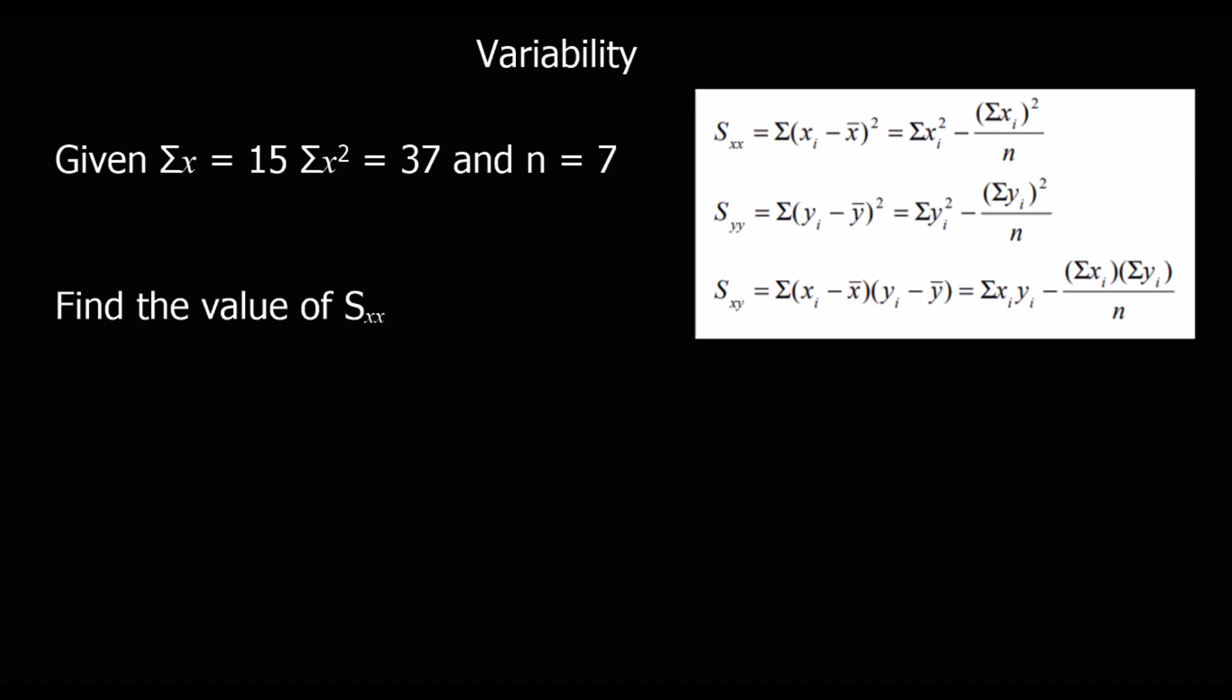These are very similar to variance. The variance of X is very similar to SXX. The only difference is variance is SXX divided by how many there are. If we had all the individual bits of information, we could use this first formula, but most of the time we're going to be using this second one. That will be the same for SYY and SXY.